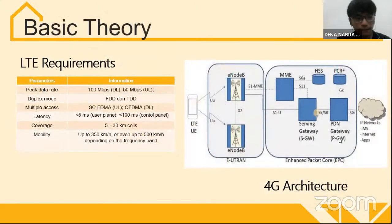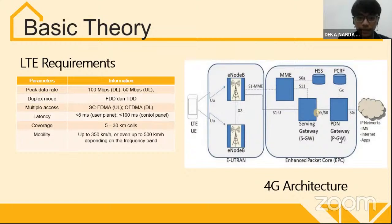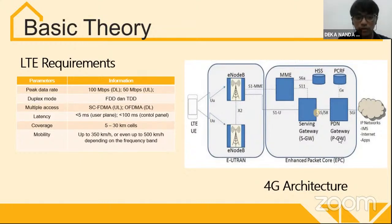Here is the basic theory. The LTE requirements shown in the left table: the peak data rate is up to 100 Mbps for downlink and 50 Mbps for uplink. The duplex modes are FDD and TDD. Multiple access is SC-FDMA for uplink and OFDMA for downlink. Latency is less than 5 ms for the user plane and less than 100 ms for the control plane. Coverage is about 5 up to 30 km per cell. Mobility is up to 350 km/h or even up to 500 km/h, depending on the frequency bands.